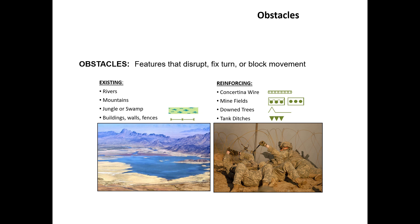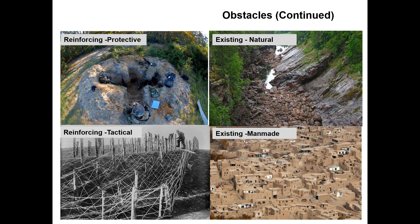Reinforcing obstacles include Concertina wire, minefields, abatis — which are downed trees across the road — and tank ditches. Reinforcing protective obstacles are things like a foxhole dug in with earthworks around it to protect them, versus reinforcing tactical obstacles that are meant to shape the battlefield and how the enemy moves, like tangle foot wire. For existing obstacles, we can break those into existing natural — streams, rivers, ravines, cliffs — or existing man-made obstacles like buildings, fences, and hedgerows that are already on the terrain for other reasons.